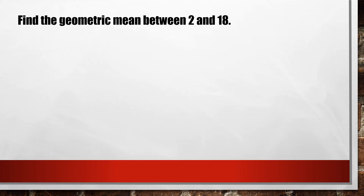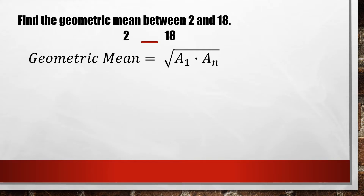For example, find the geometric mean between 2 and 18. Dealing with these two numbers, we are to find or insert a single geometric mean. To do that, let us use the formula: the square root of a sub 1 times a sub n. So what is a sub 1? A sub 1 means the first term, and the first term from our given sequence is the number 2.